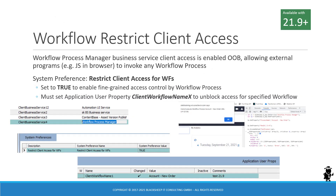In the workflow area, there is now a documented way to restrict client access for workflows. You can think of this as similar to the business service access controlled by the client business service user property — a sequential application user property. If you do not list the business service in this user property, access to it from the client — that is, the JavaScript side of Siebel from the browser — is not available. If you expose the workflow process manager, which is done out of the box, you can invoke it and run any workflow process.